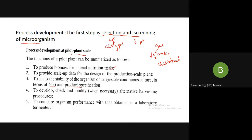Compare the organism performance with that obtained in the laboratory fermenter. Is the centrifugation, filtration, HPLC, or flocculation method sufficient? If not, make the modifications required in the pilot scale. Whatever the best output the organism gave in the laboratory scale, it should also give the best performance in the pilot scale so that you can go for large-scale biomass production.